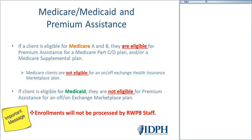Regarding Medicare and Medicaid premium assistance: if a client is eligible for Medicare Part A and B, they are eligible for their Medicare C or D plan, which makes them eligible for premium assistance. This is also true for individuals on Medicare who elect a Medicare supplemental plan. Be cognizant that all Medicare clients, including those with a Part D plan and a Medicare supplemental, are eligible for premium assistance.